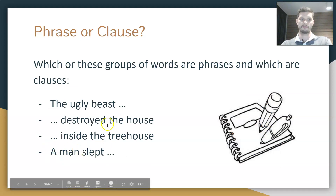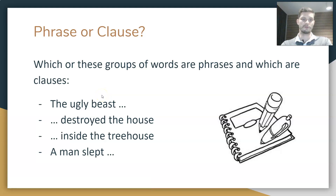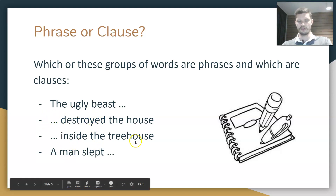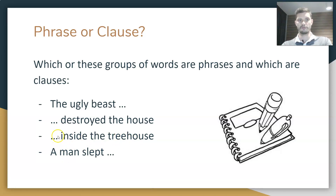Let's take a look. Are these phrases or clauses? 'The ugly beast' — does it have a verb? No, it does not. So right away we know it's a phrase. 'Destroyed the house' — 'destroyed' is a verb, but we don't have a subject; I don't know what did the destroying. 'Inside the tree house' — once again, we don't have a verb, so it's not a clause. It is a phrase.